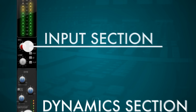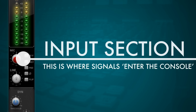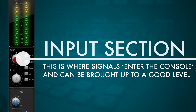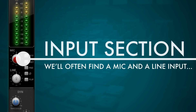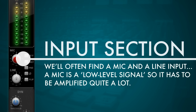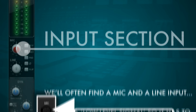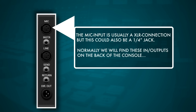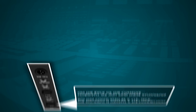On the top we find the input/output module — this is where signals enter the console and are brought up to a level where we can process them. Usually we'll find a microphone and a line input. A mic is a really low-level signal so it has to be pre-amplified quite a lot. The microphone input is usually an XLR connection, but on some cheaper models it can also be a quarter-inch jack. Normally these channel inputs and outputs are found on the back of the console.